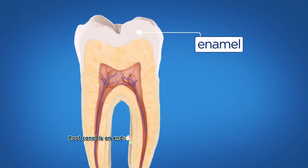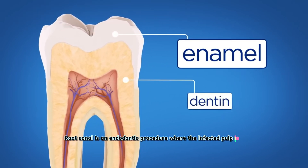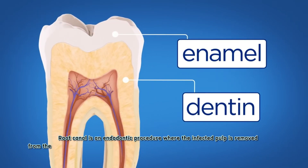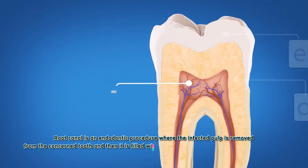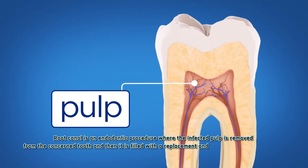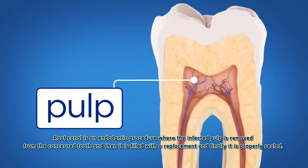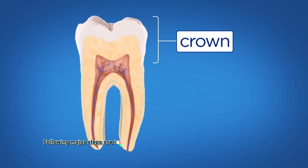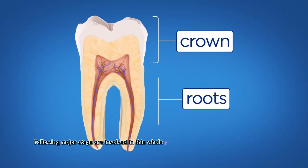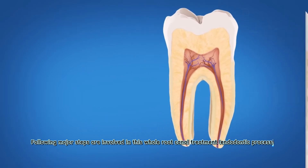Root canal is an endodontic procedure where the infected pulp is removed from the concerned tooth, and then it is filled with a replacement and finally it is properly sealed. The following major steps are involved in this whole root canal treatment endodontic process.